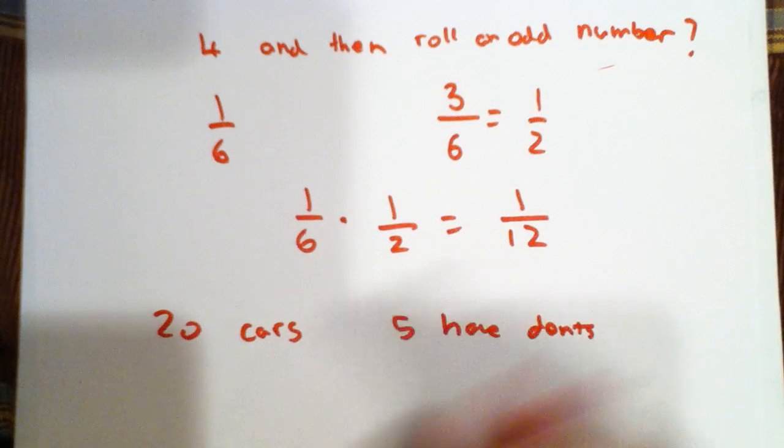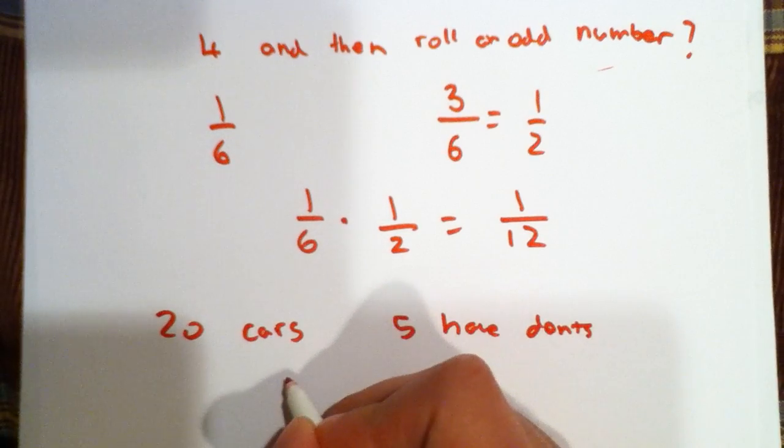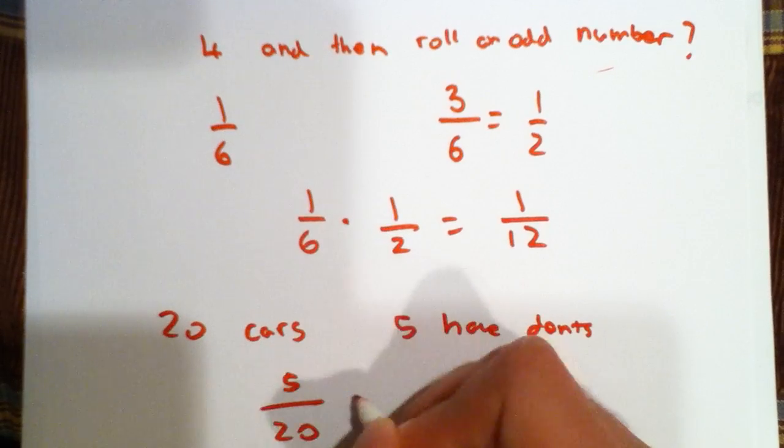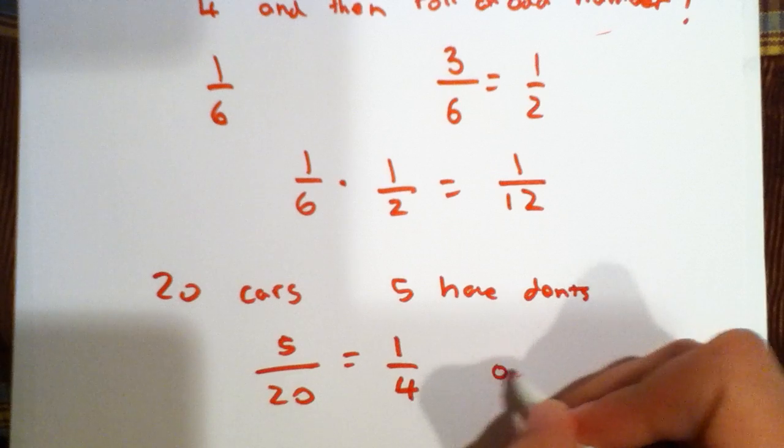So the question for an experimental probability would be like, what is the experimental probability that the next car will have a dent in it? So you already know that there are 20 cars total and 5 of them have a dent. So that means 1 fourth if you simplify this fraction have a dent, or 25%.